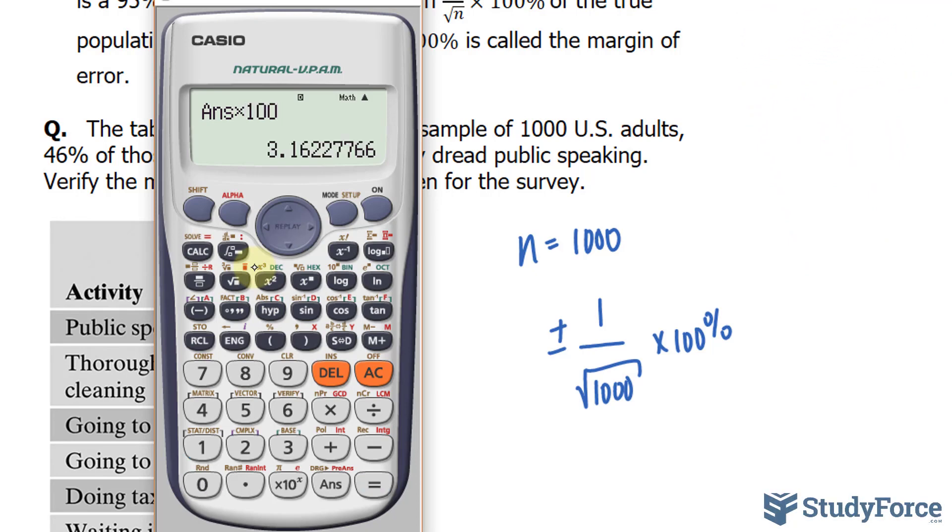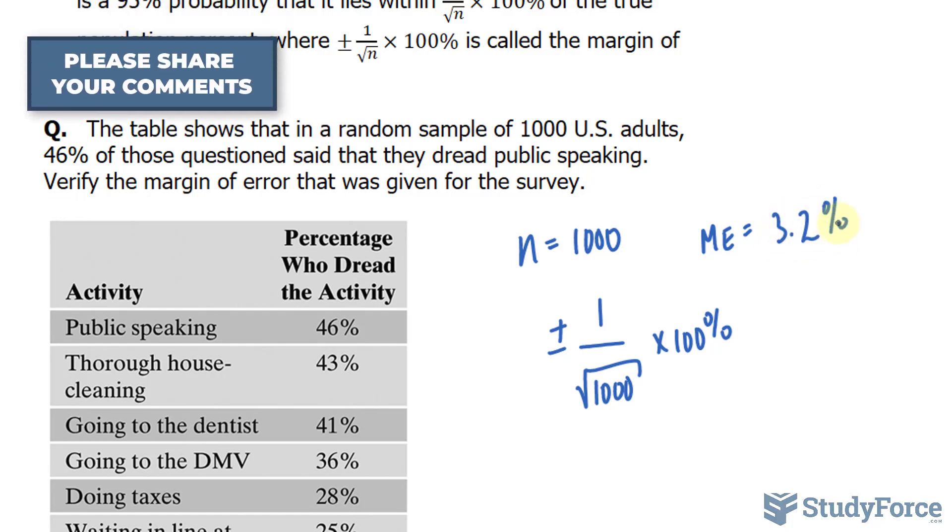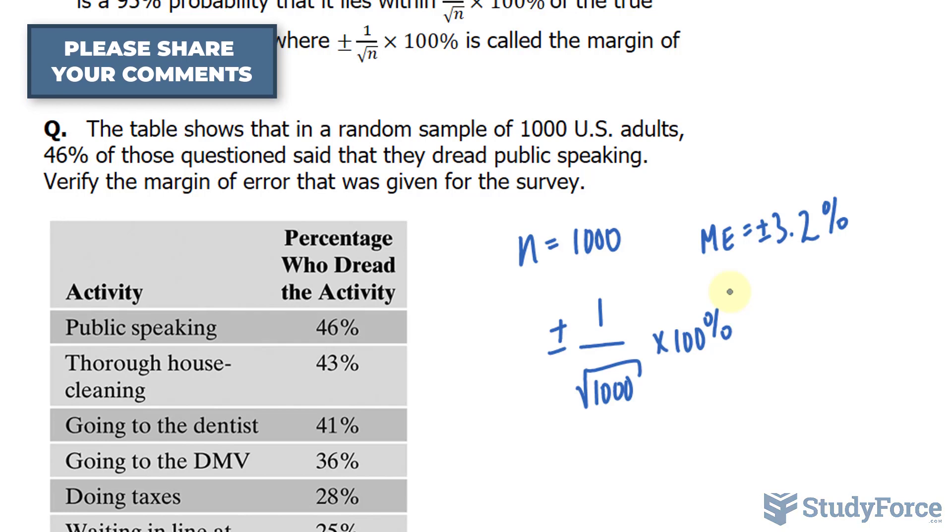And rounding this to two decimal places for the sake of simplicity, we have a margin of error that's equal to 3.2% plus minus. So let's go ahead now and write a statement about the percentage who dread public speaking.